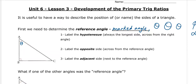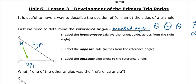The hypotenuse, no matter what, is always the longest side — we'll label it HYP for short. Now we have to label the other two sides of the triangle. One of those sides is going to be labeled the opposite side, and it's going to be across from the reference angle. So across from the reference angle would be called the opposite side, OPP for short. Then the adjacent side is the side next to the reference angle.